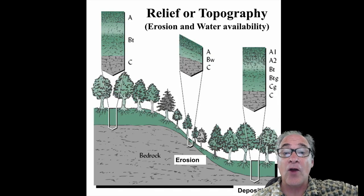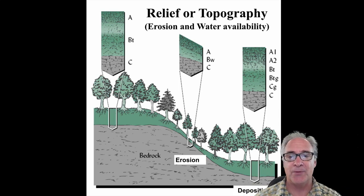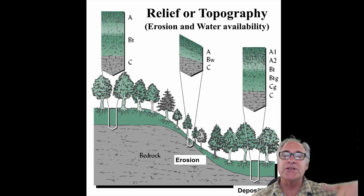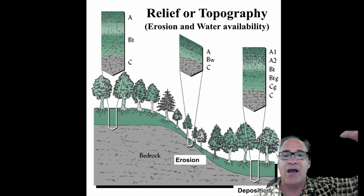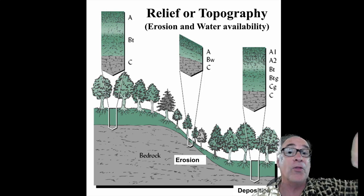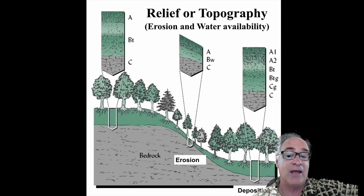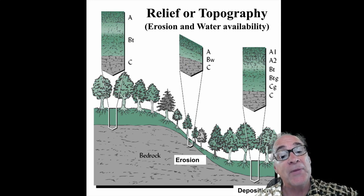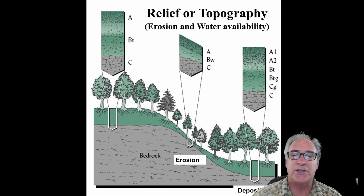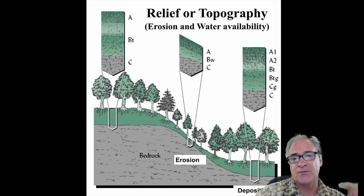Now we get to R — the R factor, or topography: the way the ground is shaped. Topography has a huge impact on the soil profile. For instance, up in the Sierras — the highest part of our cross-section through California — you'll have all three horizons: typically an A layer, a fairly thick B layer, and of course a C layer. That's fairly stable, so those are the oldest soils you'll find in California if you cross-section from east to west.